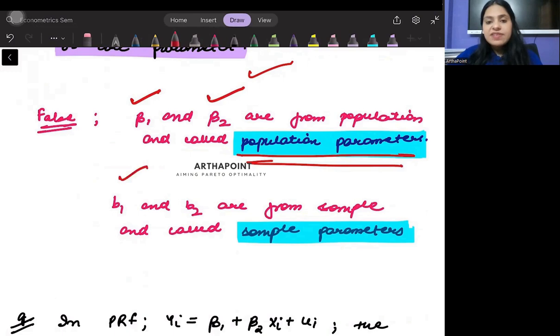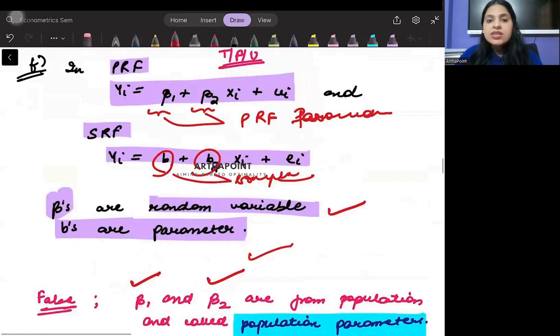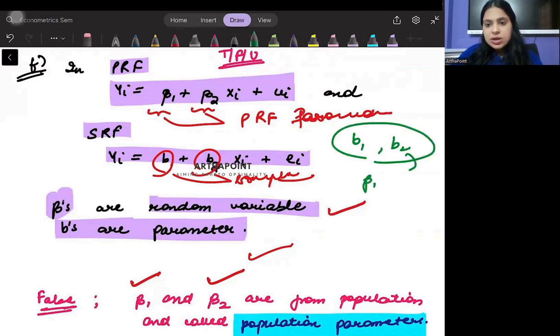B1 and b2 are from the sample and therefore they form what is called as the sample parameter. The other thing that you must go ahead and recognize is that b1 and b2 are actually used to estimate beta 1 and beta 2.